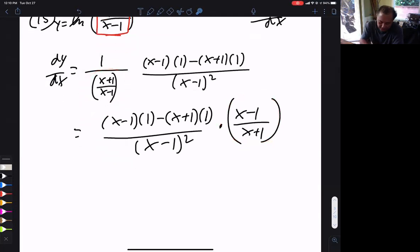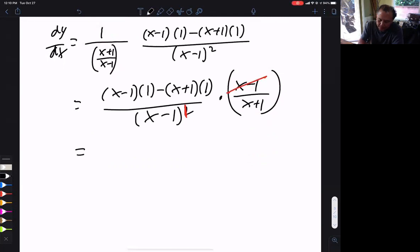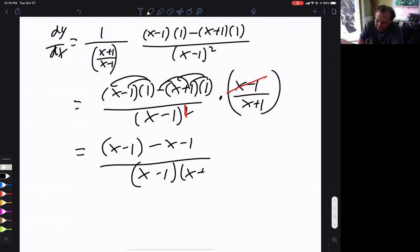And magically, one of these cancels one of those. And let's do some simplification here. Distribute this here and here. I get x minus 1 minus and distribute the minus sign. I get minus x minus 1 over x minus 1, x plus 1.